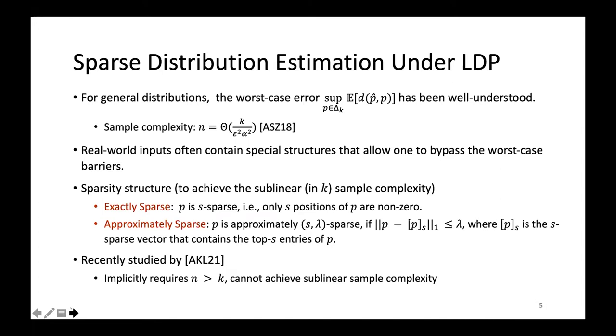For general distributions, the worst case error has been well understood and the optimal sample complexity is roughly O(k/epsilon^2). However, real-world inputs often contain special structures that allow one to bypass such worst-case barriers. We consider sparse or approximately sparse distributions, which are perhaps the most natural structured distributions. If the number of non-zeros in p is at most s, we call it s-sparse, and let p_s be the s-sparse vector that contains the top s entries of p. We say p is approximately s,lambda sparse if the L1 error between p and p_s is less than lambda. We aim to utilize the sparsity structure to achieve sublinear sample complexity. This problem has been recently studied, but existing techniques implicitly require n larger than k, thus cannot achieve sublinear sample complexity.